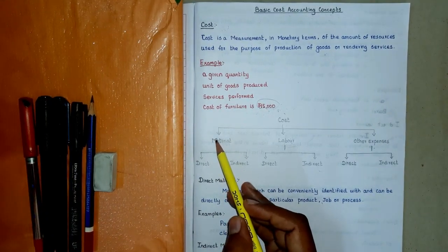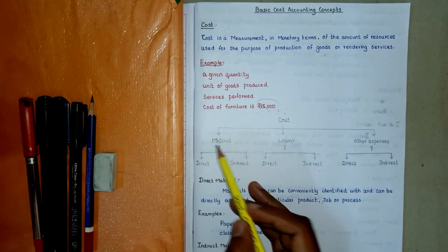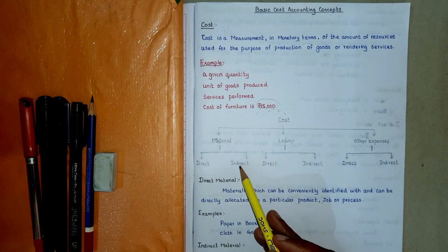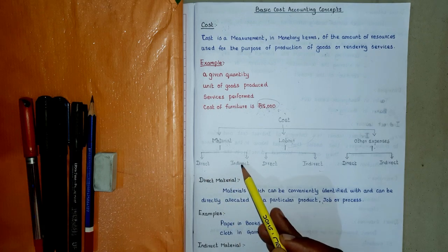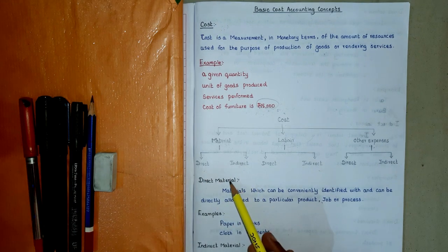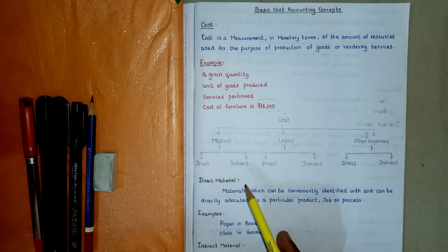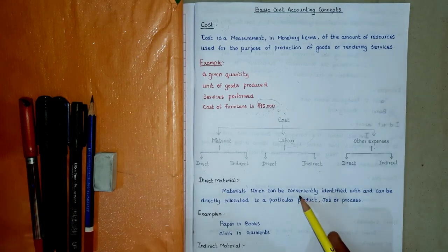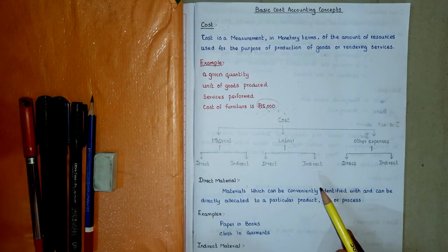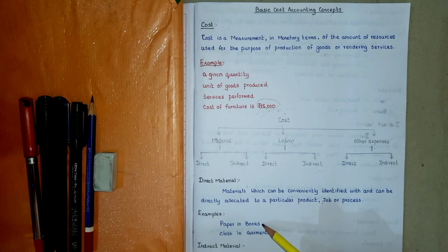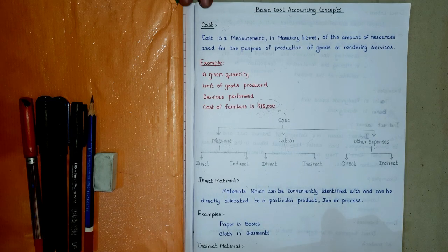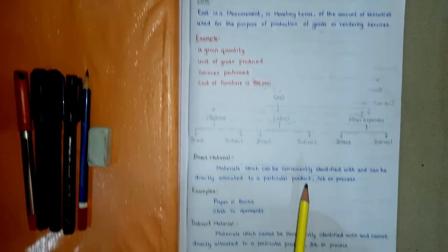Here we come to know that cost has been divided into material, labor, and other expenses. Material means commodities supplied to an undertaking. For costing purposes, materials may be classified into two broad categories: direct material and indirect material. Direct material is material that is used directly in the production process and is reflected in the final product. Example: paper in books.